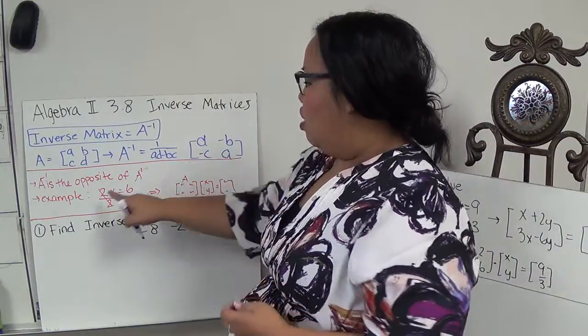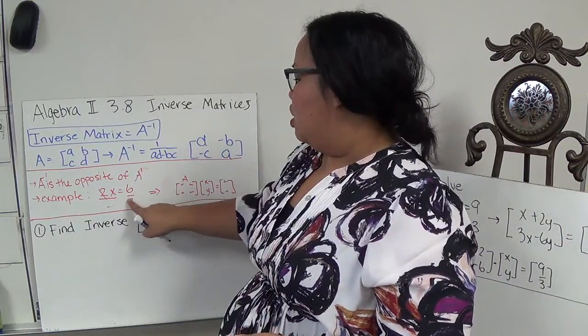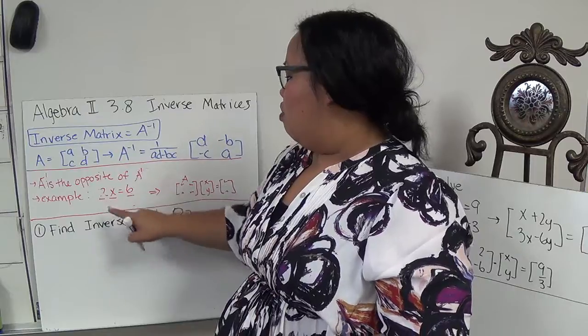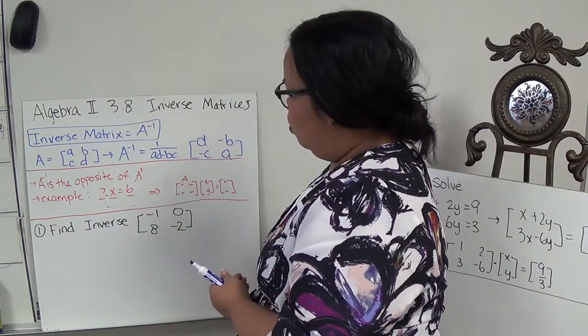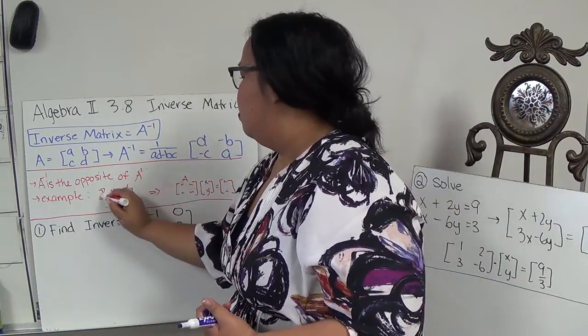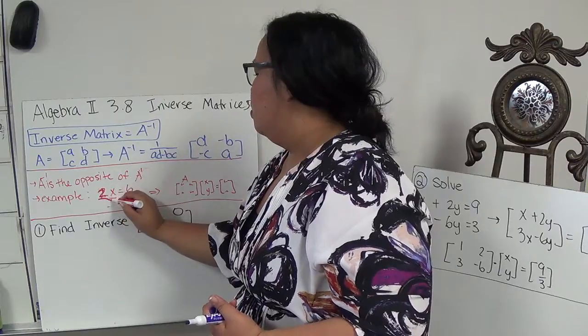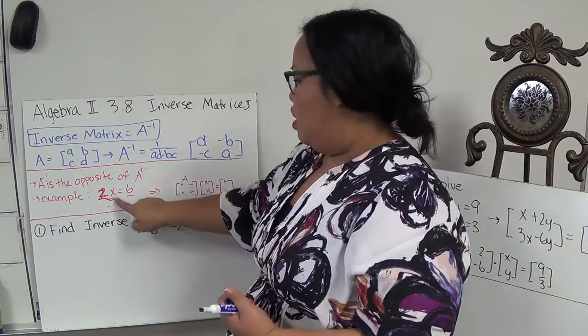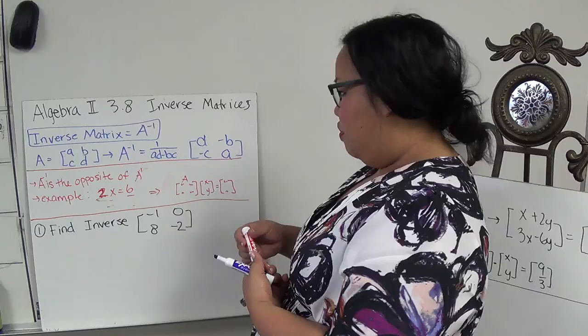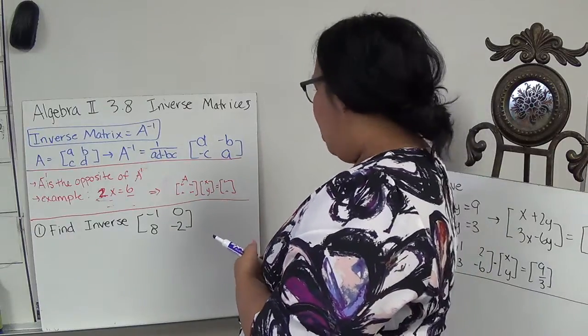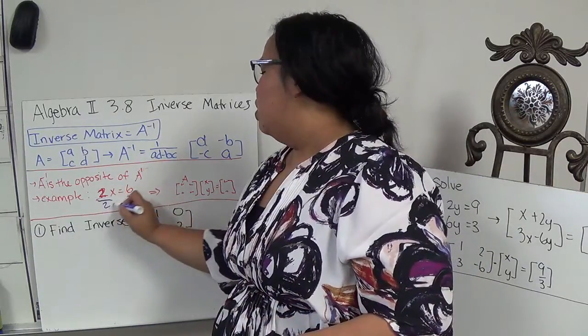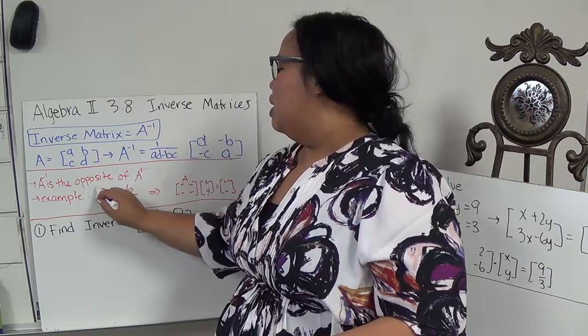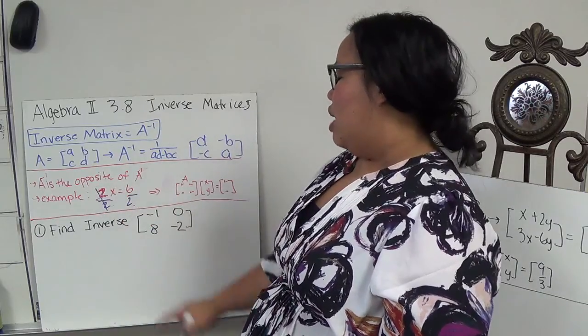So if you see here, if I had just this equation and I wanted to get rid of 2, I would do the opposite of 2, which then I would divide both sides by 2, canceling this out, leaving me with just x on that side.